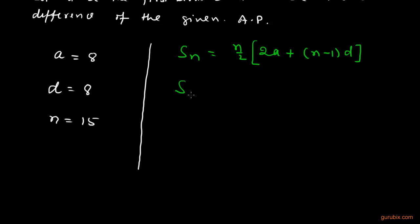n is 15. This means 15 over 2 multiplied by 2 into 8 because a is 8, plus 15 minus 1, n is 15, and d is 8.